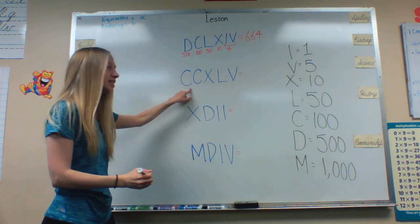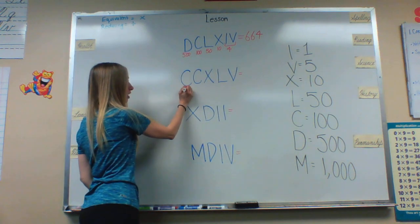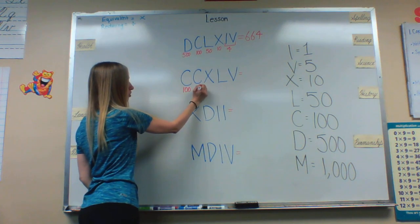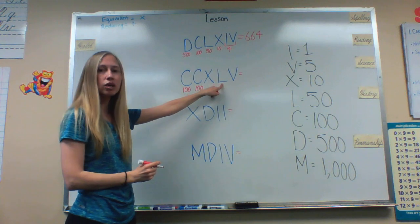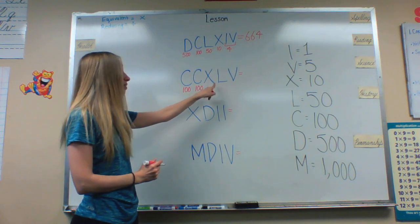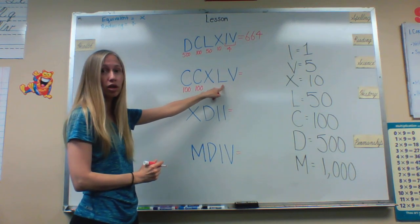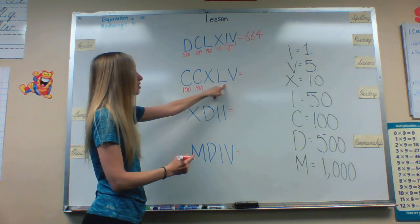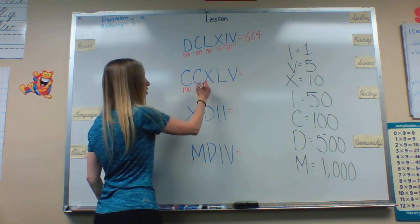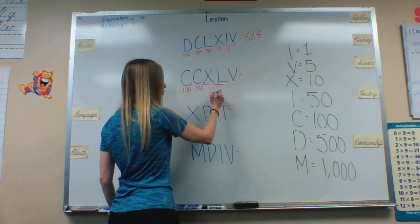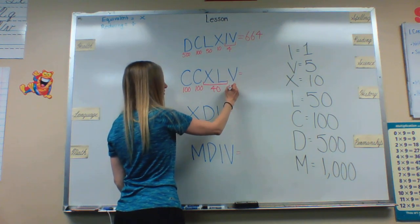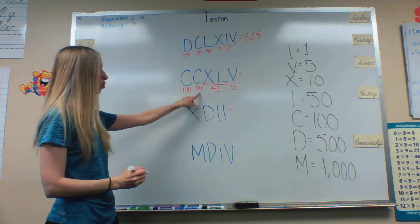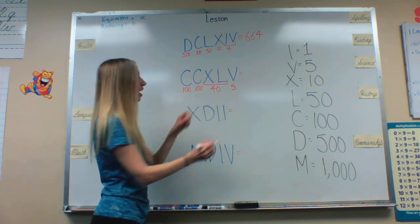Next we have C's. C equals 100. Another C equals 100. X equals 10. L equals 50. So again I have a smaller Roman numeral before a larger one which means I'll need to subtract. So 50 minus 10 would equal 40. So I'll put a 40 right there. And V equals 5. 100 plus 100 is 245.